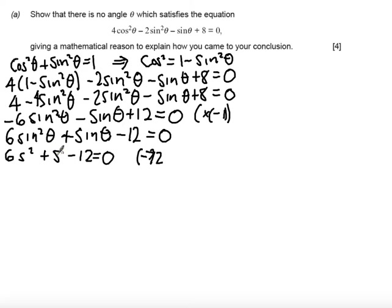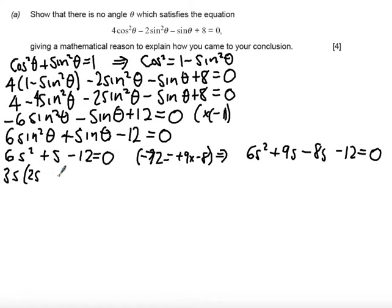I want to have 2 factors which have a difference of 1, so if I had +9 times -8 this would give us what I need. So I'll rewrite this as 6s² + 9s - 8s - 12 = 0. Factorising the first pair of terms I can take 3s out, so I get left with 2s + 3.